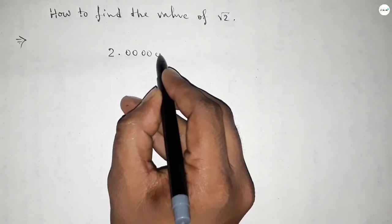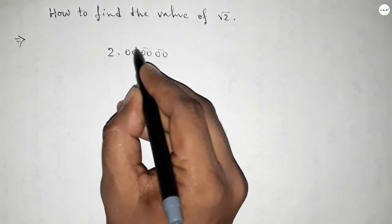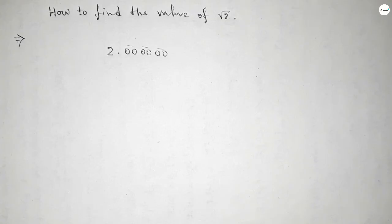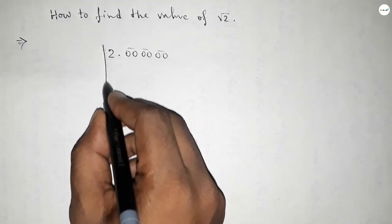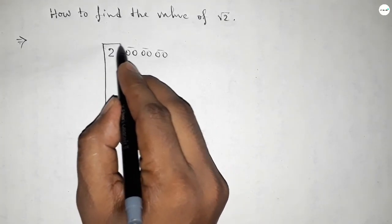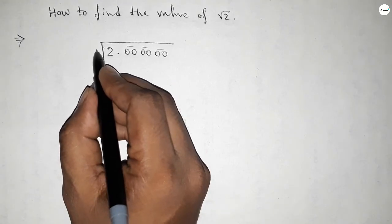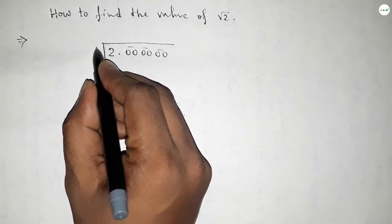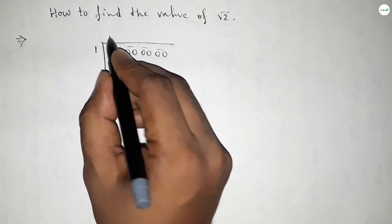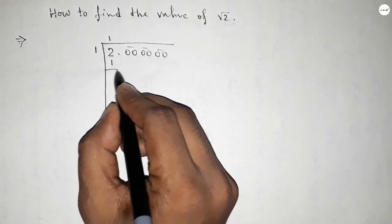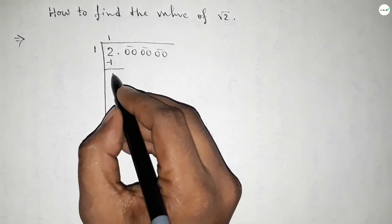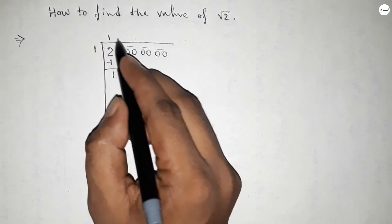So for 3 decimals we can write 2.000000 and mark the pairs of zeros. Now taking here the division line. If here we put 1, then we have 1 times 1 equals 1. If we put 2, then 2 times 2 equals 4, which is greater than 2. So we should take 1 and this is 1, and this point will be here.